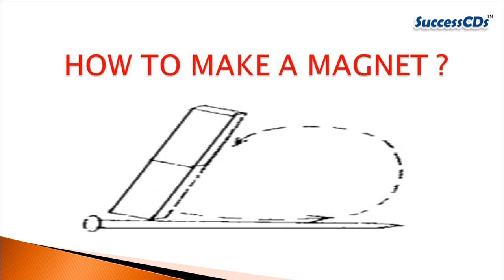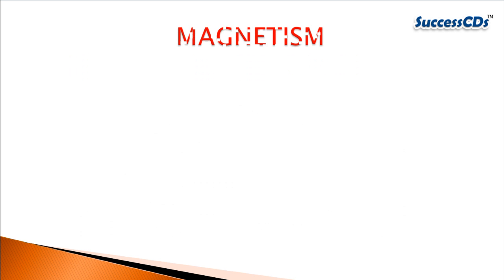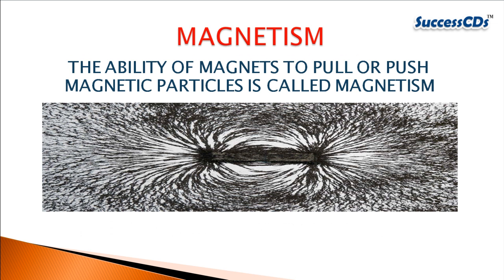Children, do you know that you can convert any piece of iron into a magnet? Try this: take an iron nail and rub a magnet on the nail for about 20 to 30 times in the same direction with the same end of the magnet, and bingo — you will get another temporary magnet!